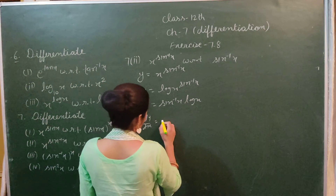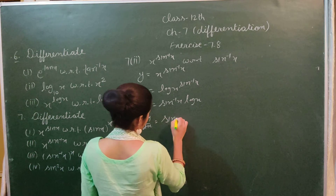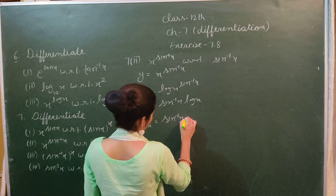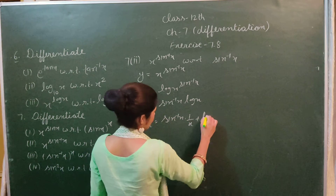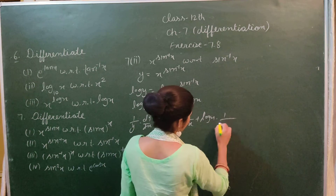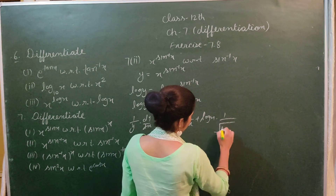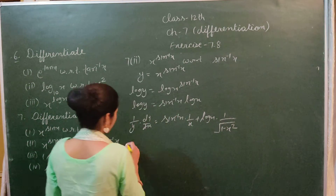Differentiating with respect to x using the product rule: (1/y)(dy/dx) = sin⁻¹x times (1/x) plus log x times (1/√(1 - x²)).